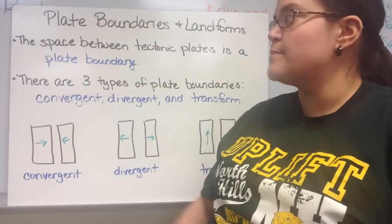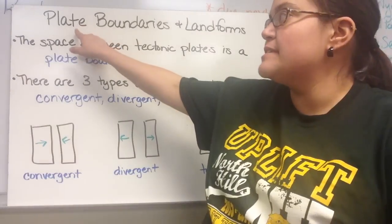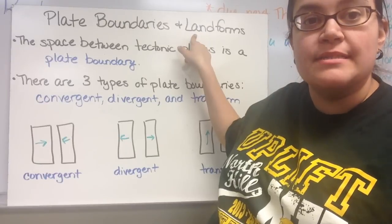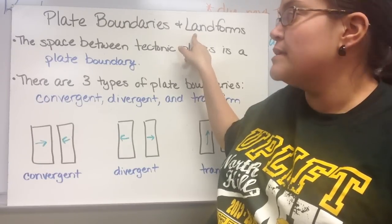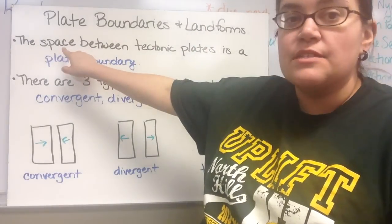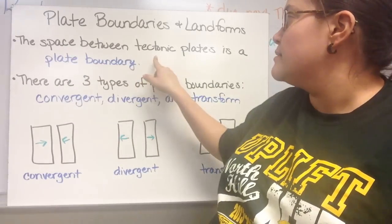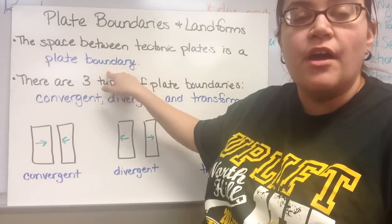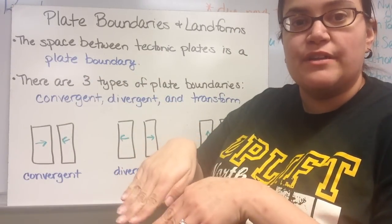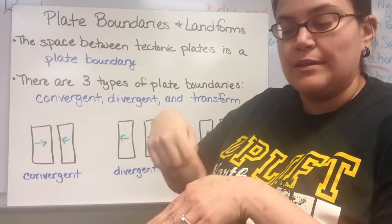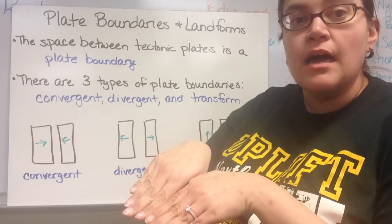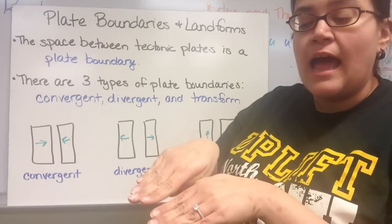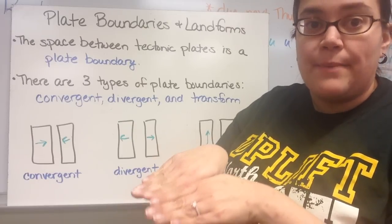Today's video is about the different types of plate boundaries and what landforms or what happens at those boundaries. Remember from our last video, the space between tectonic plates is called a plate boundary. When you have all those different chunks of the lithosphere broken up, there are little gaps between each of the plates where they fit kind of like jigsaw puzzle pieces, and those gaps are called plate boundaries.